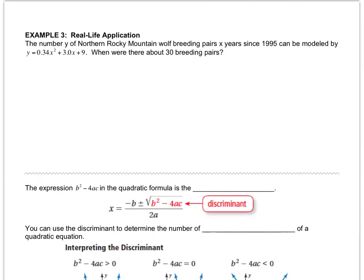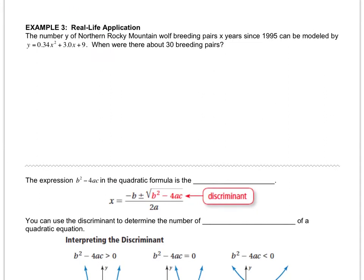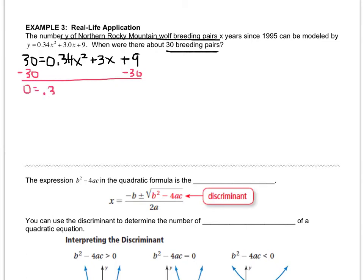For example 3, I'm going to start you off and then at one point I'm going to ask you to see if you can continue it on your own. The number of northern Rocky Mountain wolf breeding pairs x years since 1995 can be modeled by that quadratic. When were there about 30 breeding pairs? So y represents the number of breeding pairs. I'm going to plug that in for y, and while I'm writing this down I can see that there are decimal coefficients. Nobody in their right mind would want to solve a quadratic by factoring or completing the square with decimal coefficients. So that's when the quadratic formula really comes into play. The last thing I'm going to do is get all the terms over to one side. This is the quadratic that I'm going to ask you to solve.